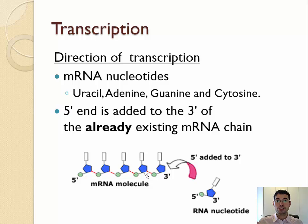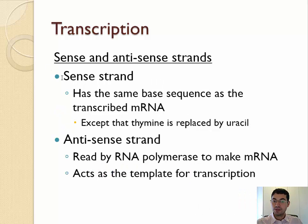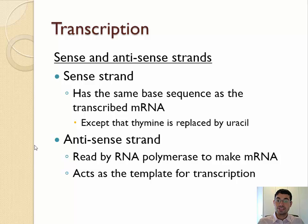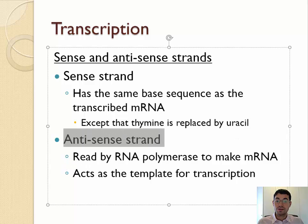It's working in the 5' to 3' direction of the new strand, adding new nucleotides to the already existing 3' end. As a quick reminder, the sense strand is the one that has more or less the same base sequence as the transcribed mRNA, except that all the thymines are replaced by uracil. The antisense strand is complementary to the sense strand — it's the other strand of DNA — and it's also complementary to the mRNA strand. It's this antisense strand that the RNA polymerase will actually read to make the mRNA, so it acts as the template for transcription.